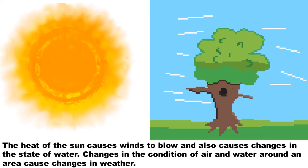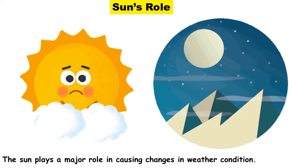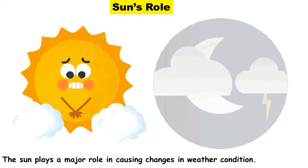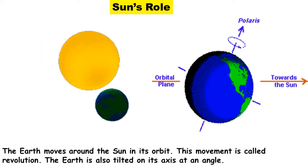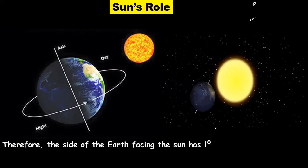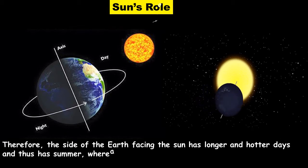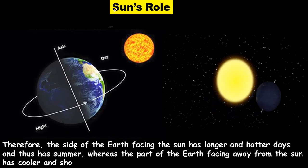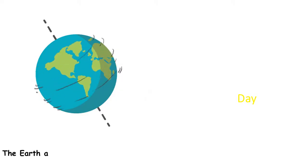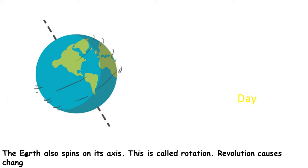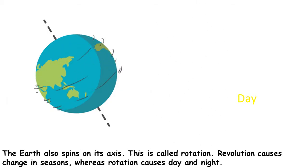The Sun plays a major role in causing changes in weather conditions. The Earth moves around the Sun in its orbit — this movement is called revolution. The Earth is also tilted on its axis at an angle. Therefore, the side of the Earth facing the Sun has longer and hotter days, and thus has summer, whereas the part facing away from the Sun has cooler and shorter days, and thus has winter. The Earth also spins on its axis — this is called rotation. Revolution causes changes in seasons, whereas rotation causes day and night.